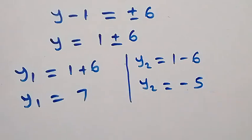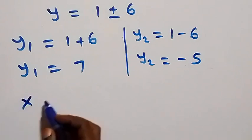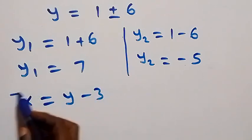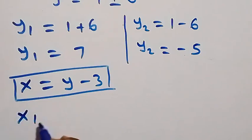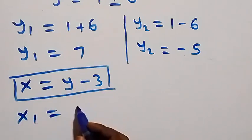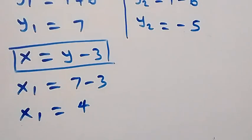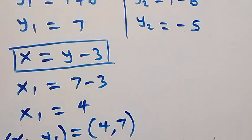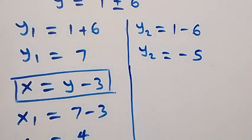From equation three, x equals y minus three. For the first value, x₁ equals y₁ minus three, which is seven minus three, so x₁ equals four. The first set of solutions is (x₁, y₁) equals (4, 7).